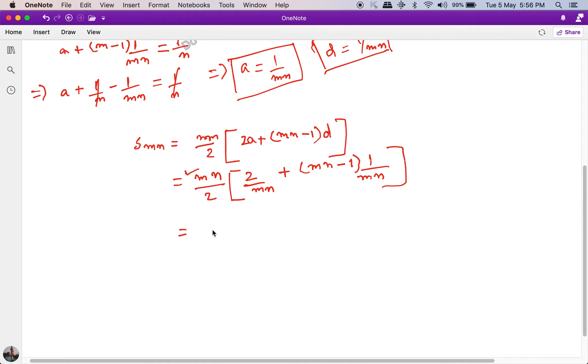And what I'll have is half multiplied by 2 plus (mn minus 1), and this is equal to half multiplied by (mn plus 1). And this is what we were supposed to prove.